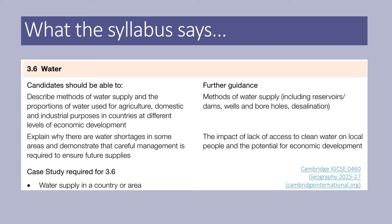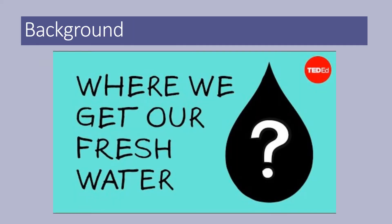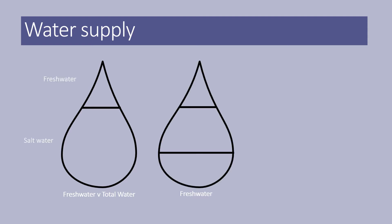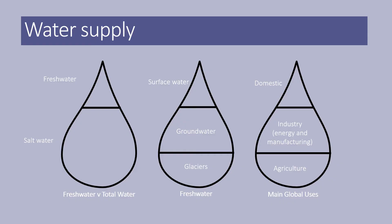I'll put a link in the comments to a TEDx video — it's quite an old one now but it's a brilliant overview of water supply. From that video, you can break it down into three drips. The first drip is looking at the percentage of fresh water versus total water. From that, you need to know that of the small amounts of fresh water on the planet, how much is stored within surface water, groundwater, or glaciers. And the final one: how do we go about using our global water? Agriculture is predominantly our main use of water, followed by industry, and then a small amount for domestic.